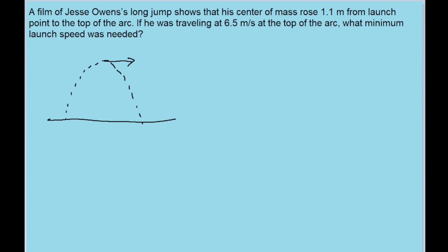Now we're going to solve this problem using the law of conservation of energy, which tells us that the amount of energy he had just as he launched from the ground, E1, is equal to the amount of energy he had at the top of his arc before he started coming down.